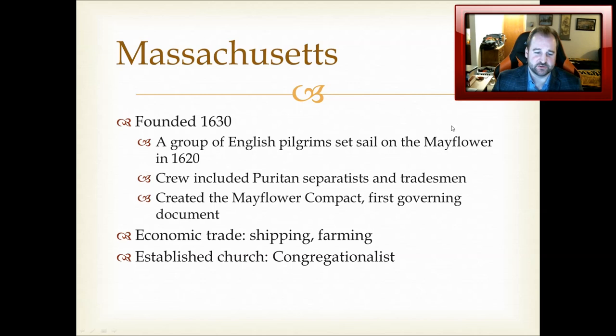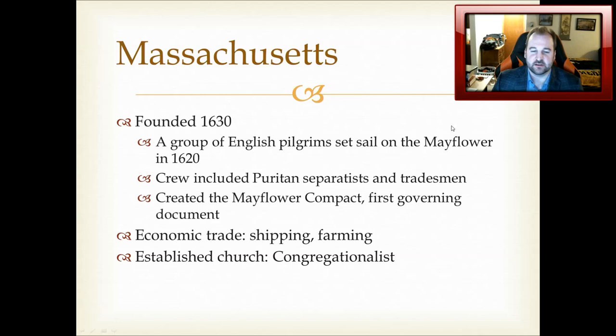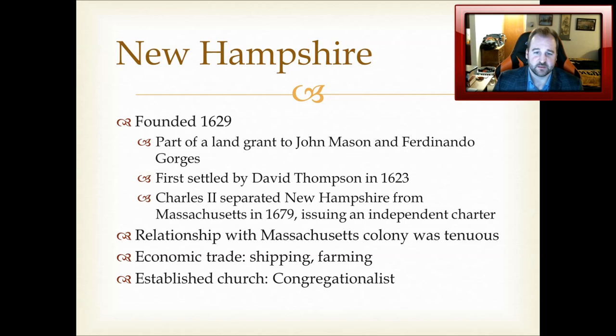The economic trade of Massachusetts was generally shipping and farming. Boston grew to a population of about 14,000 on the eve of the Stamp Act crisis, making it one of the biggest cities in the New World and a key trading hub — people throughout the New England colonies would ship goods to Massachusetts to be shipped elsewhere. The established church was Congregationalist, and Massachusetts maintained its official connection to that church all the way until 1833.